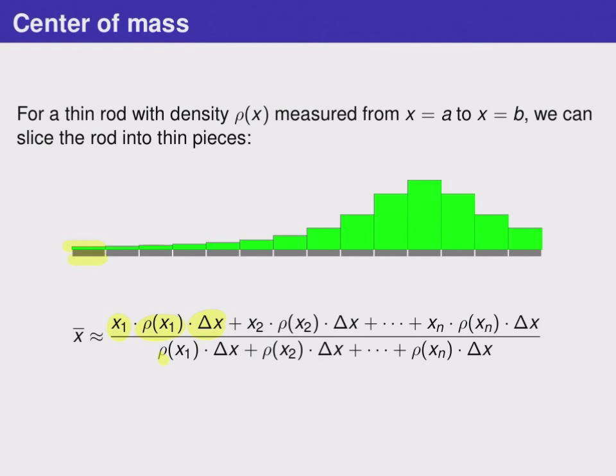The denominator has density times delta x again, and so we're really adding up the masses of each individual piece. Take a moment and go back to compare this to the formula for the center of mass on the previous screen.